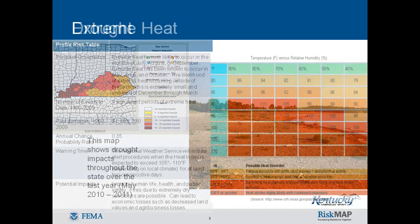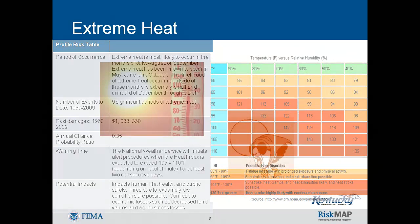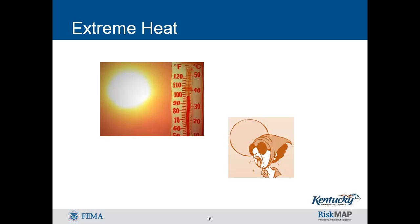Extreme heat is defined as temperatures that hover 10 degrees or more above the average temperature for a particular region and last for several weeks. Extreme heat can pose a threat even to those individuals and communities who are accustomed to high temperatures. Approximately 175 Americans die every year from the effects of extreme heat. The elderly, young children, and sick people are especially prone to heat-related illness. Heat kills by pushing the human body beyond its limits. In extreme heat and high humidity, evaporation is slowed, and the body must work extra hard to maintain a normal temperature.